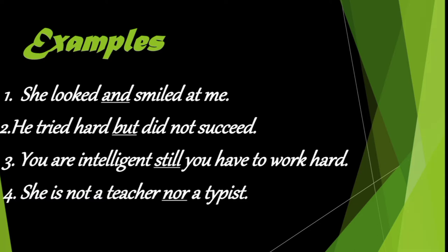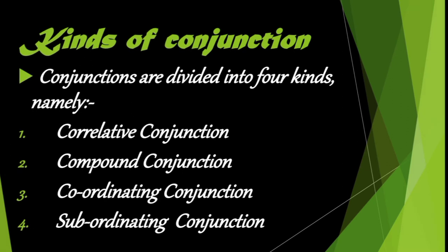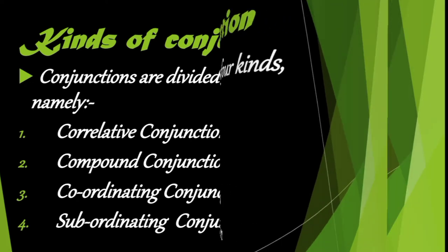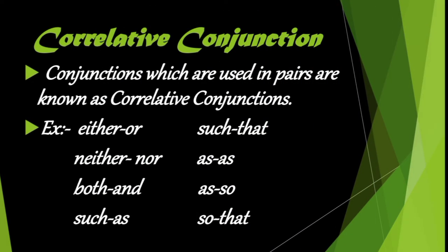Let us see the kinds of conjunctions. Conjunctions are divided into four kinds: correlative conjunctions, compound conjunctions, coordinating conjunctions, and subordinating conjunctions. We will see all these conjunctions in detail.